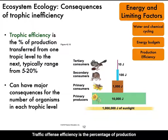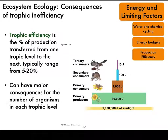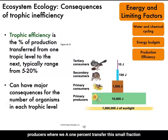Trophic efficiency is the percentage of production transferred from one trophic level to the next, and is typically between 5 and 20 percent. This is illustrated by an idealized pyramid of energy showing approximate energy transfer between trophic levels. This example uses a 10 percent trophic efficiency, other than the first transfer of sunlight to chemical energy in primary producers, where we see a 1 percent transfer.